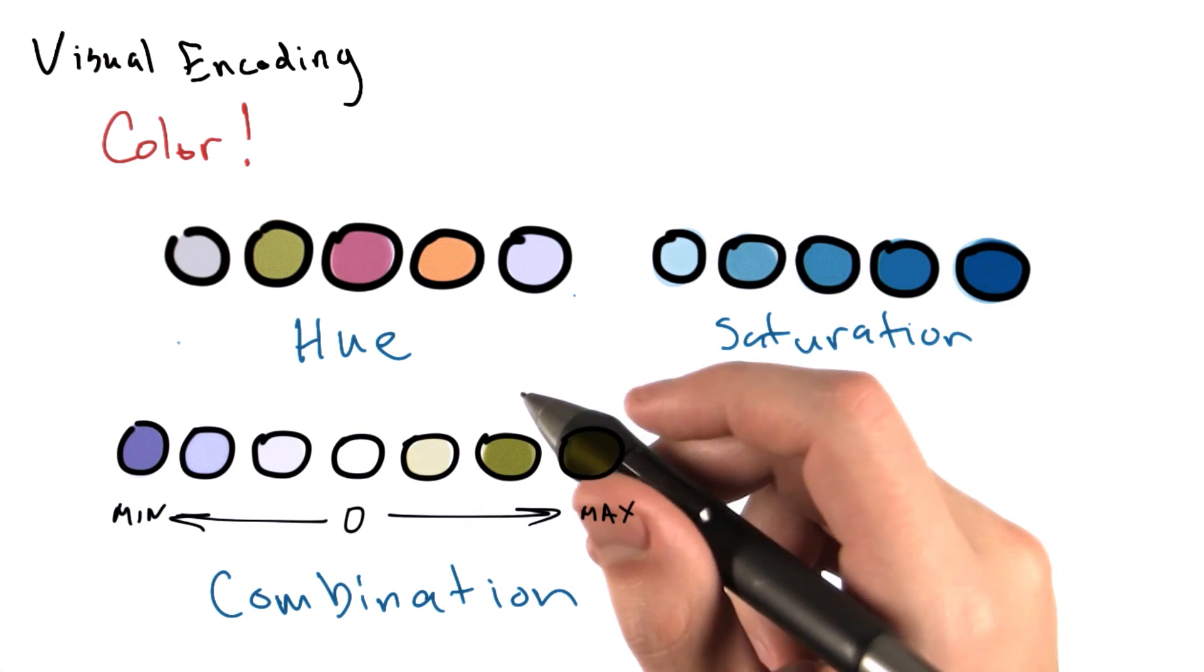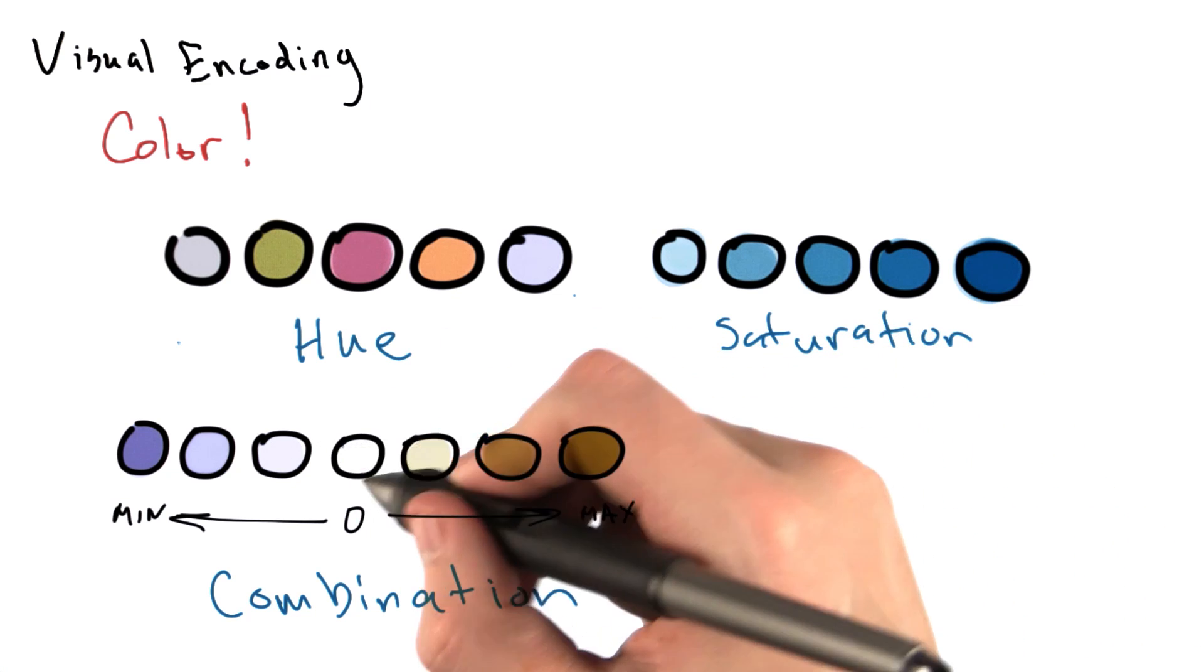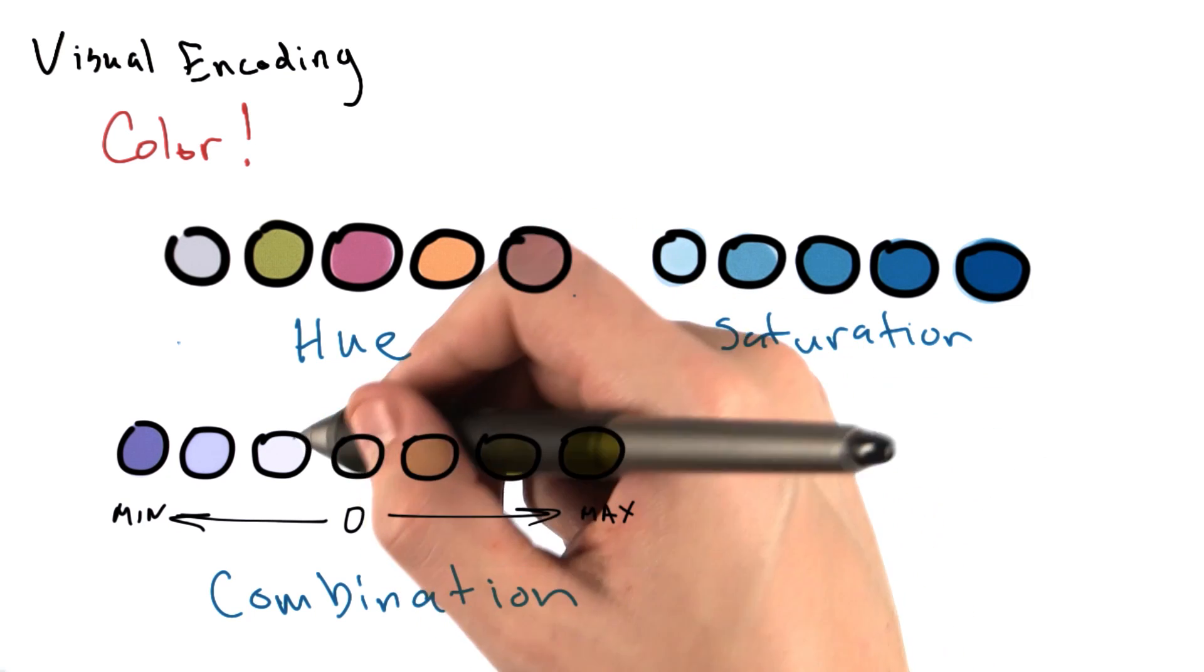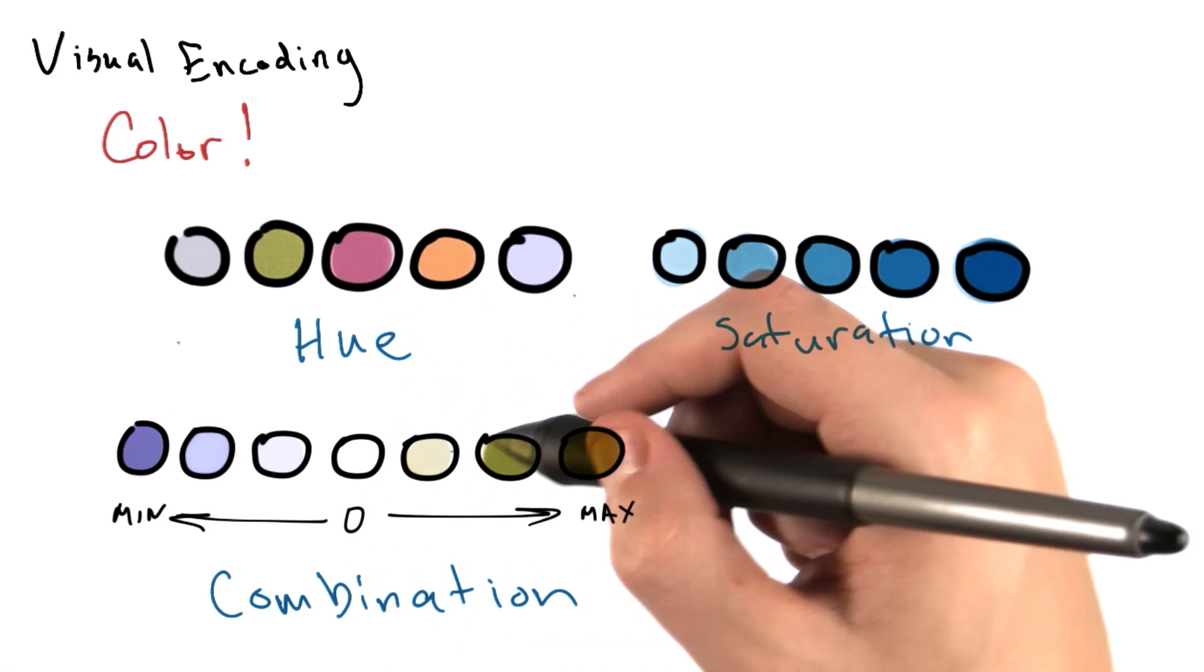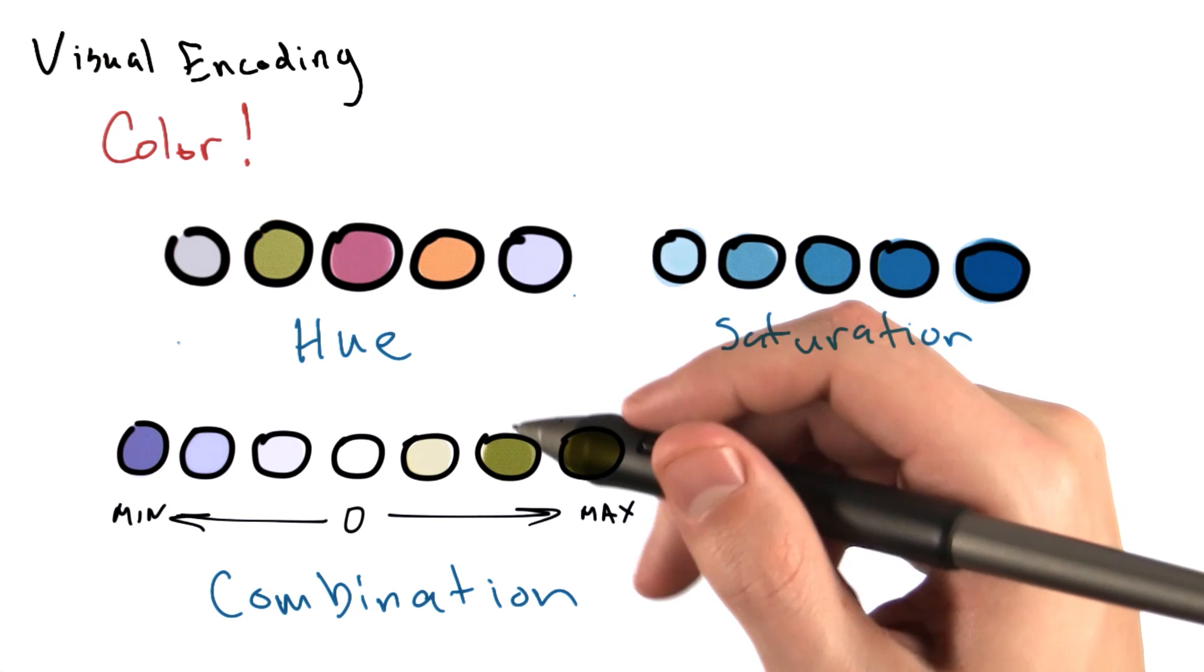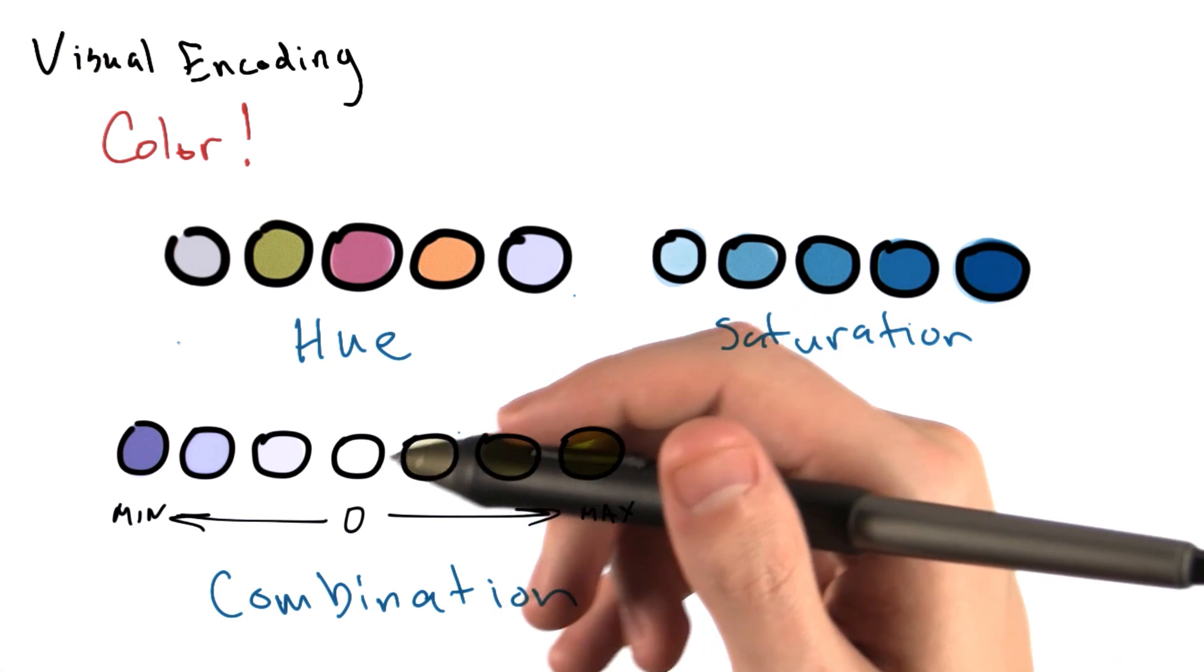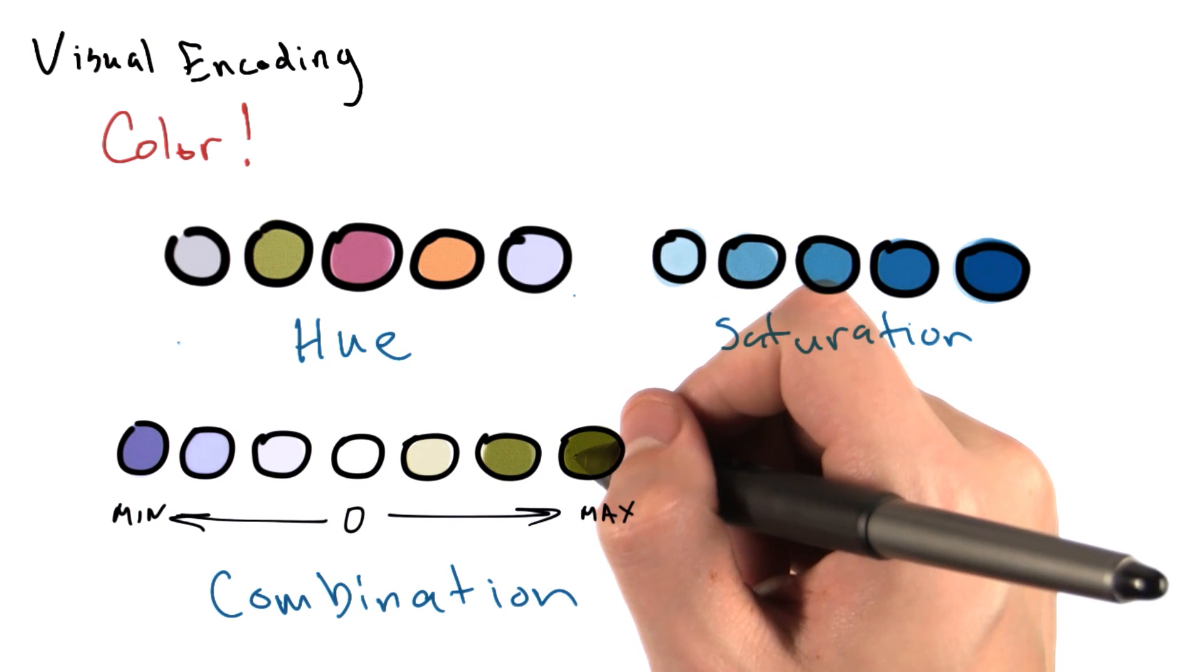We could also use hue and saturation in combination. So you can see here that no hue and no saturation is set to zero. And in this particular encoding, the more saturated our purple-like color is, the more negative we are. And the more saturated our green-like color is, the more positive we are. This might accentuate the differences in value and tell us when the value is positive or negative and how intense the absolute value of that effect is.